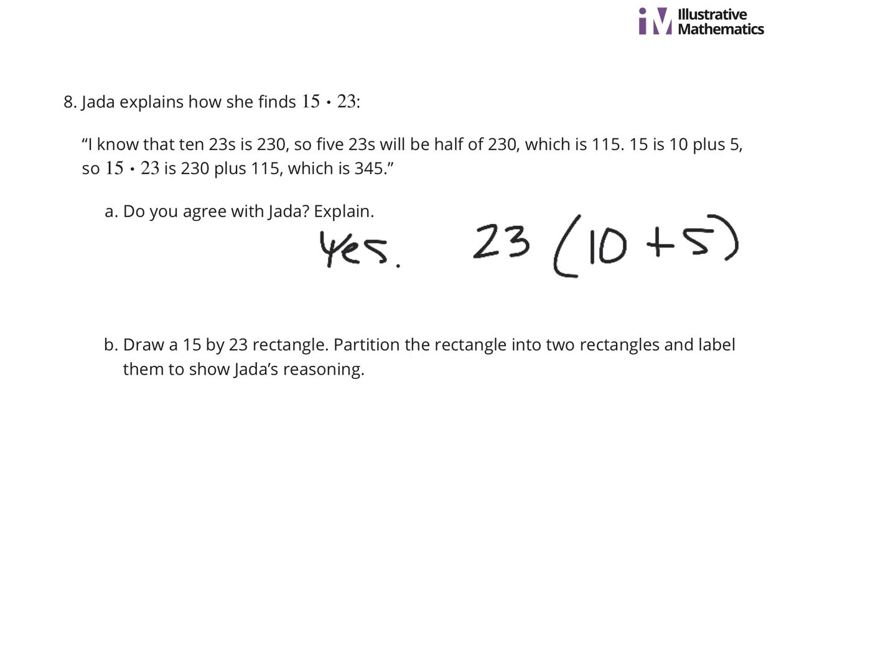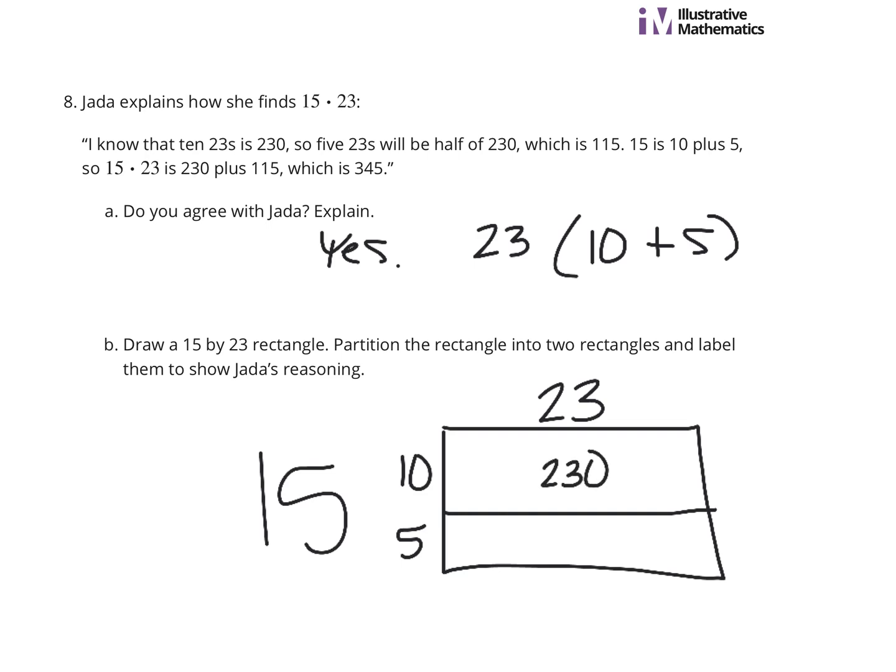If you think about the distributive property, what she's doing here is she's taking that 23 and then breaking apart the 15 into 10 plus 5. Now, draw a 15 by 23 rectangle and partition this into rectangles and label them to show her reasoning. Basically, if this whole side is 15, she's breaking it into 10 and 5, and she's got the 23. So, instead of taking 23 times 15, she's breaking it down. 23 times 10 is 230. 23 times 5 was that 115, or half of 23 times 10, and that gets you the total here of 345.